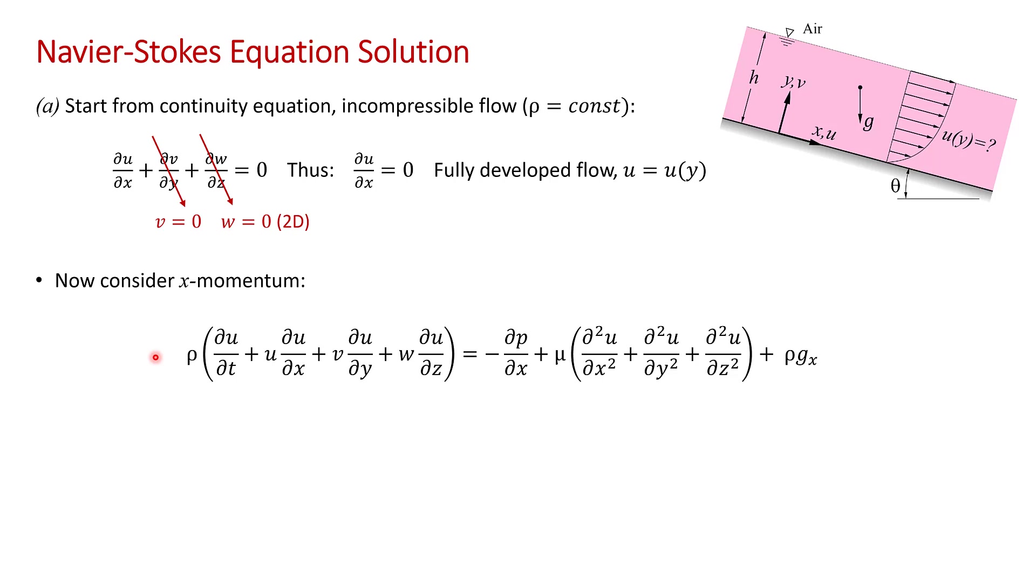Now we can apply a number of simplifications from the problem statement. You're told that the flow is steady, so there's no change in u with respect to t. We just showed using the continuity equation that u(y) is fully developed, so ∂u/∂x = 0. You're told that v is zero everywhere. We know that w is zero because the problem is two-dimensional. Of course, ∂u/∂z would also be zero. You're told in the problem statement that there's no pressure gradient in the x direction. And similarly, because the u component of velocity is not changing in x, the second derivative will also be zero. And it's two-dimensional, so you have no change in u in the z direction.